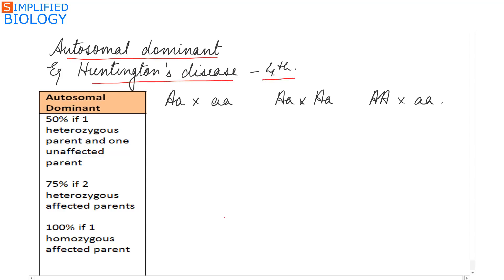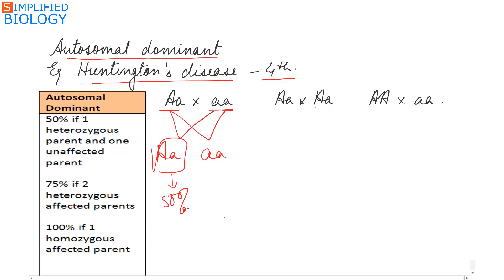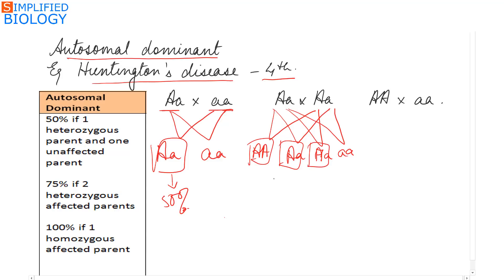Huntington's disease is present on the 4th chromosome. In case of an autosomal dominant disease: if one parent is heterozygous and the other is unaffected (homozygous recessive), 50% of offspring are affected. If both parents are heterozygous, 75% of offspring are affected. And if both parents are homozygous dominant, 100% of offspring are affected.